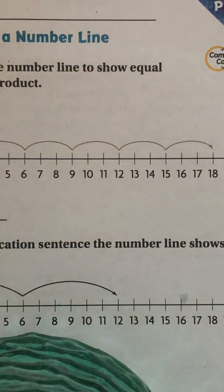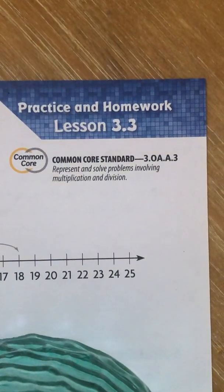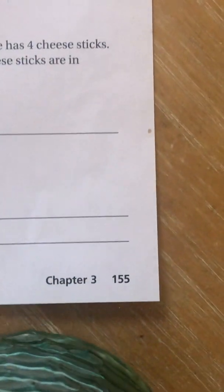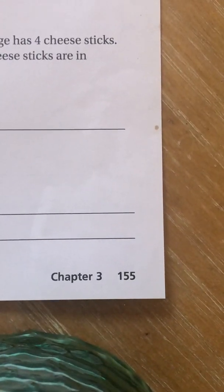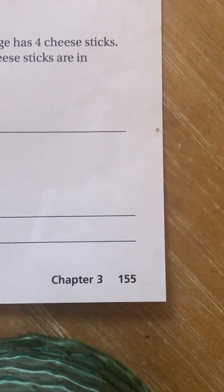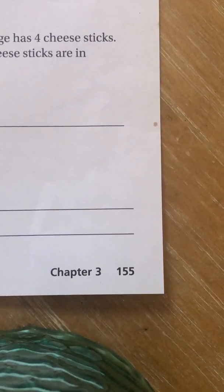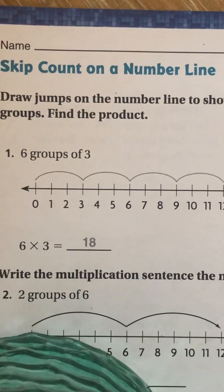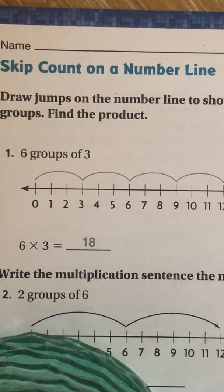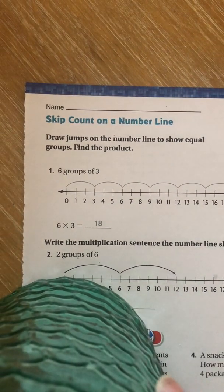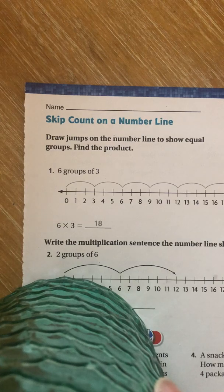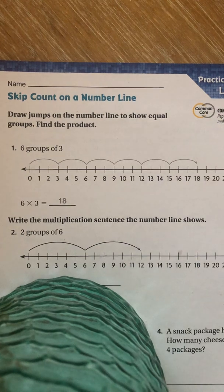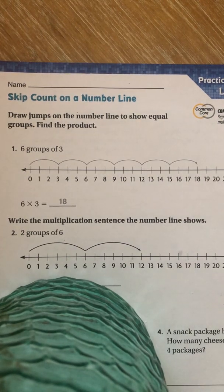So tonight's homework, ladies and gentlemen, is lesson 3.3. You should be on page 155. I will do some on the back also, which is page 156. At the top, there's what we're doing. Skip count on a number line. So let's begin with number one. Now, number one shows the answer, but I still want to go over it quickly. It says, draw jumps on the number line to show equal groups. Find the product.